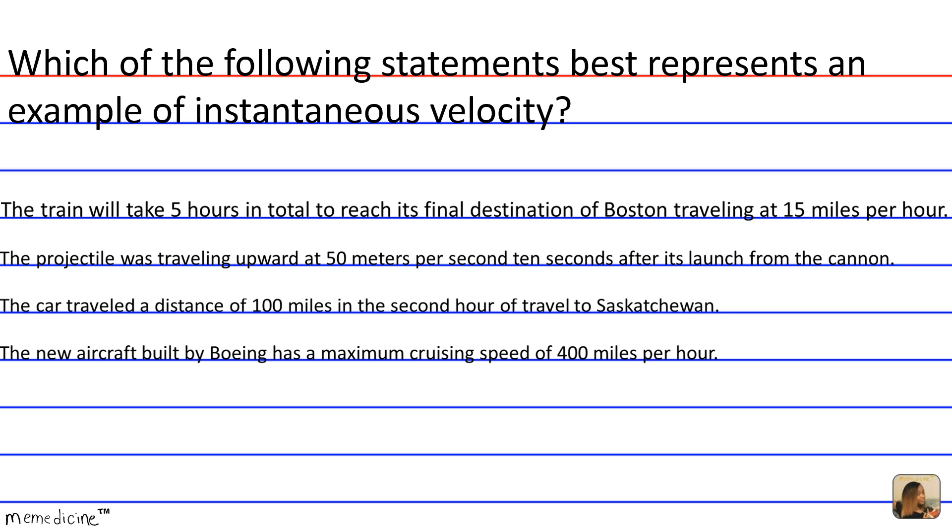Or D. The new aircraft built by Boeing has a maximum cruising speed of 400 miles per hour.